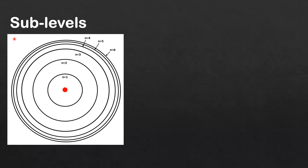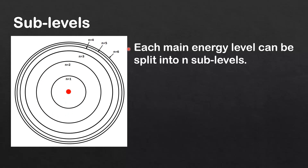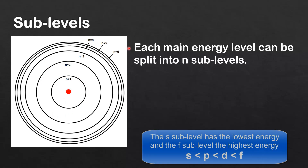Let's start with sublevels within the atom. We've looked at the Bohr model of the atom, with the protons and neutrons in the nucleus and the electrons in energy levels or shells around the nucleus. Each of the main energy levels can be split into N number of sublevels. N equals 1 has 1 sublevel: the 1s sublevel.